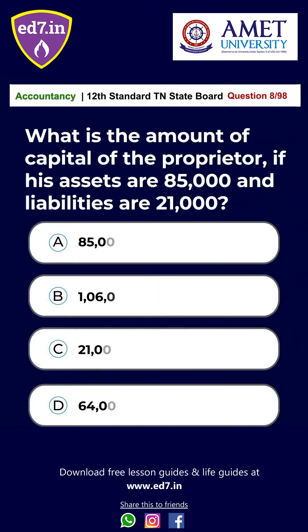Question 8: What is the amount of capital of the proprietor if his assets are ₹85,000 and liabilities are ₹21,000? Option A: ₹85,000, option B: ₹1,06,000, option C: ₹21,000, option D: ₹64,000. The answer is option D: ₹64,000.